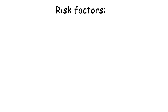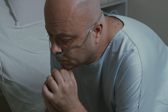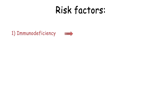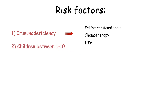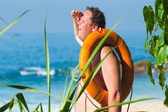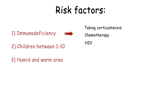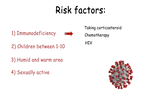There are some factors that increase the risk of getting molluscum contagiosum. The first and most important one is immunodeficiency — it has been proven to be strongly associated with an underlying cellular immunodeficiency. Anything that weakens our immune system, such as taking corticosteroids, being on chemotherapy, or diseases like HIV, can increase the risk of infection. Children between 1 to 10 years of age, especially those with atopic dermatitis or eczema, are more susceptible. Living in a humid and warm area, having close contact with other people or being in crowded places, and being sexually active are also risk factors.